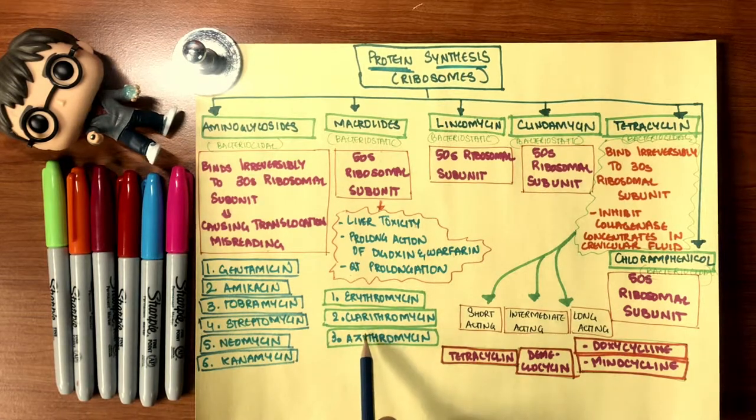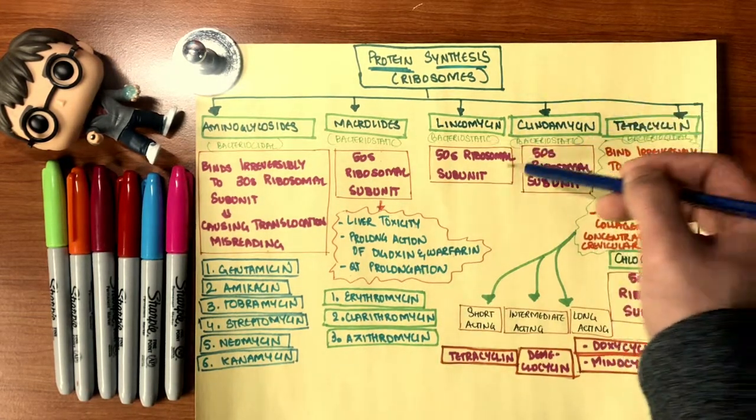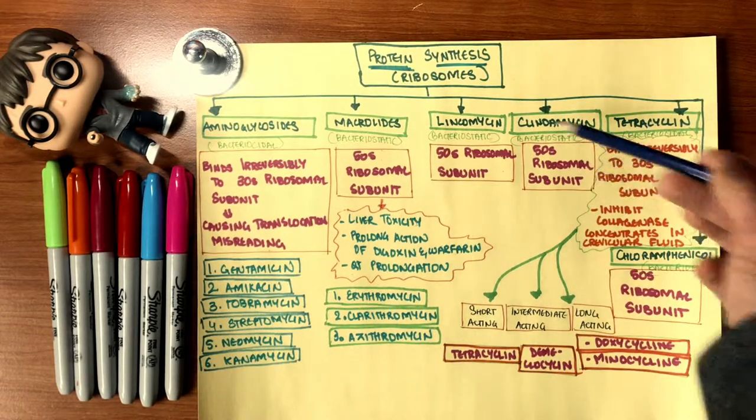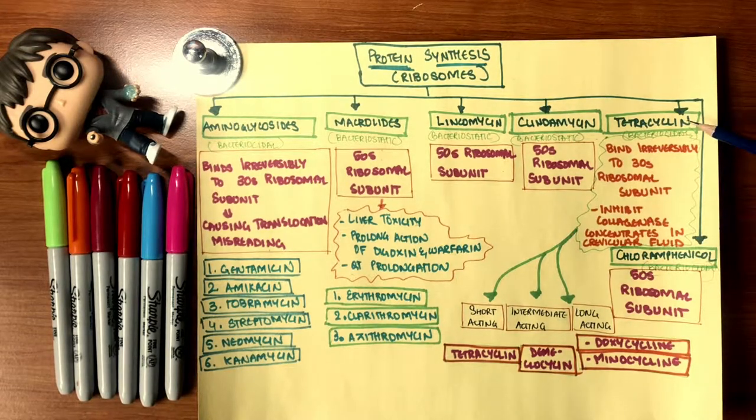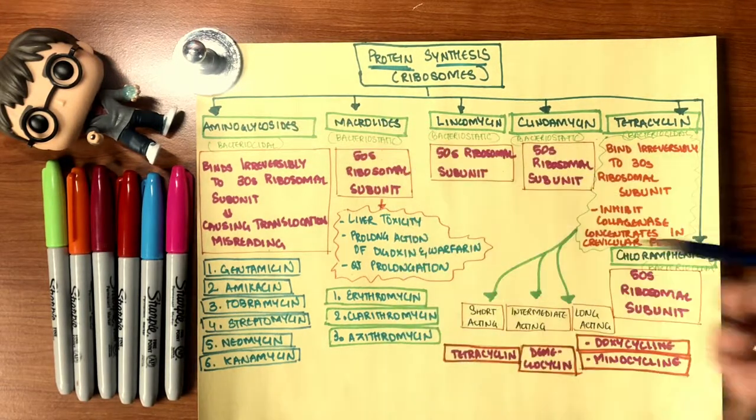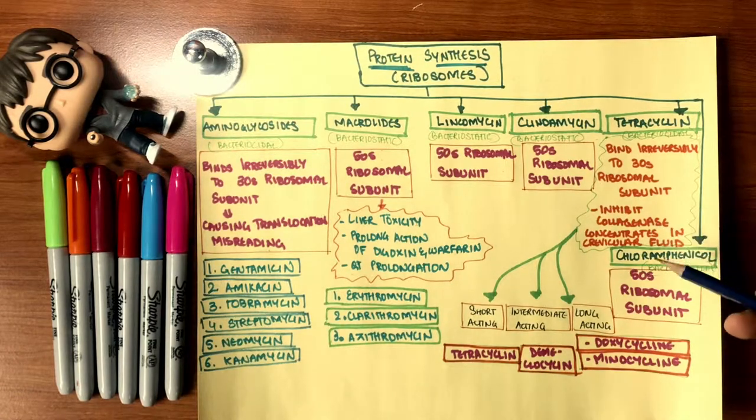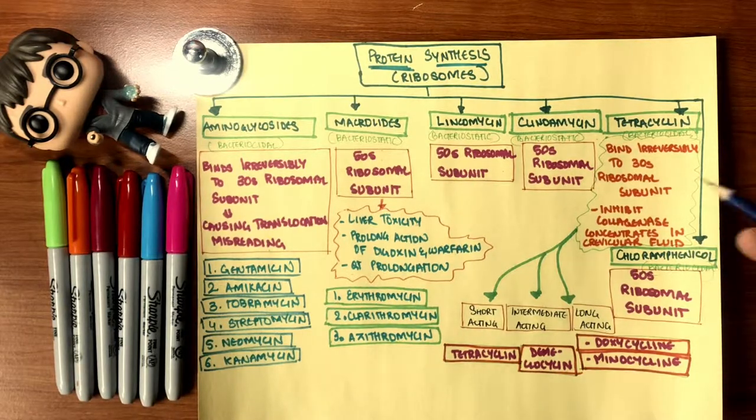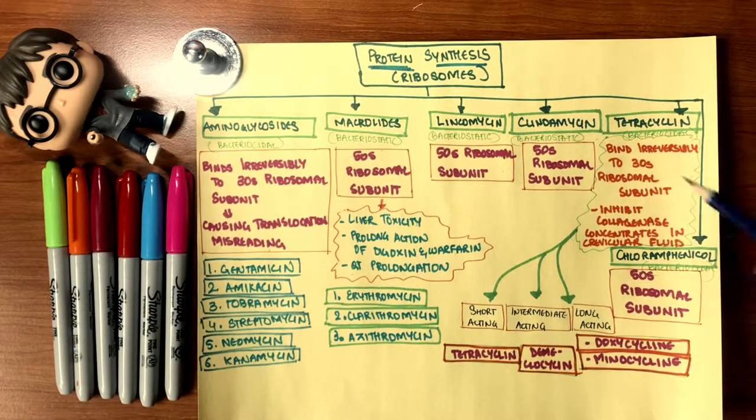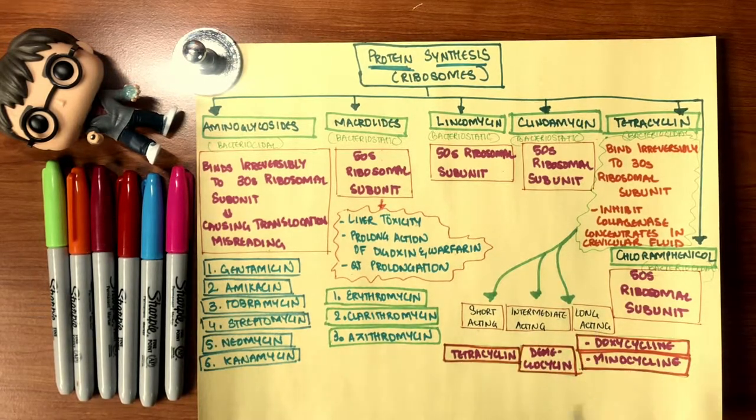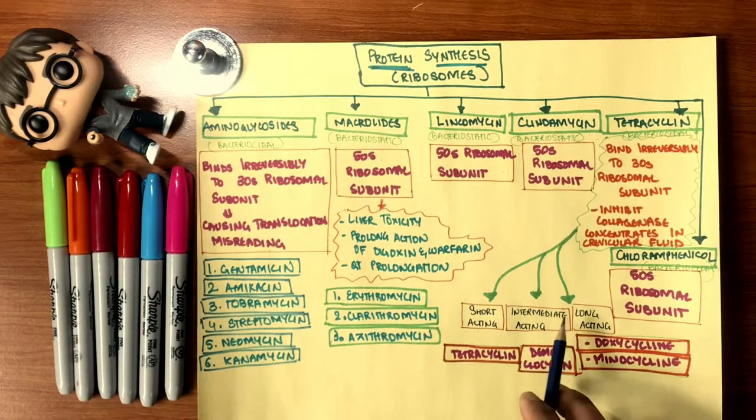Lincomycin: bacteriostatic, 50S ribosomal unit. Clindamycin: bacteriostatic, 50S ribosomal unit, work the same way. Tetracycline is bacteriocidal. It kills the bacteria by binding irreversibly to 30S ribosomal units, such as aminoglycosides. It inhibits the collagenase and concentrates into the crevicular fluid, therefore this is a very risky drug. There are three subclassifications: short-acting, intermediate-acting, and long-acting.